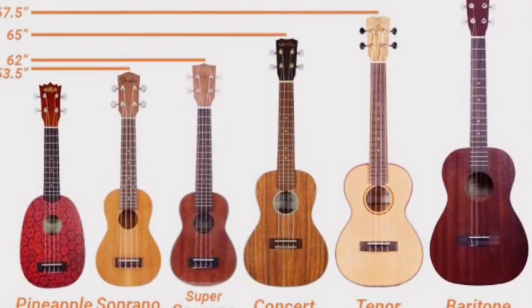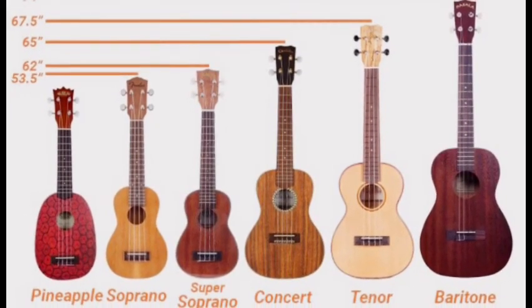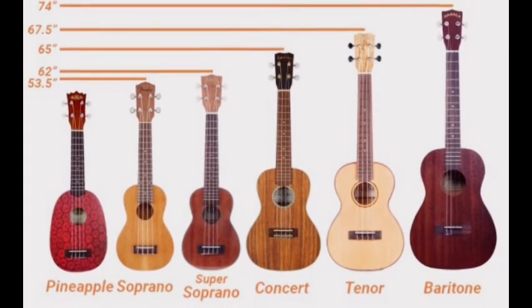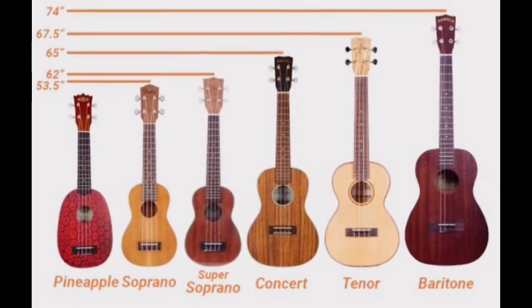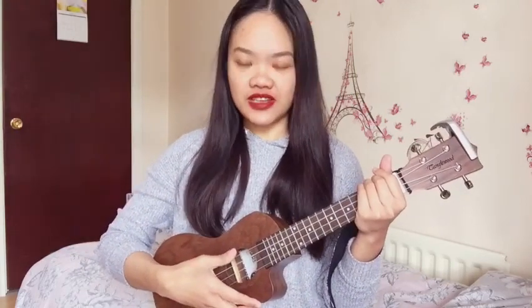There are different types of ukulele based on its size. The one I'm using is the concert type of ukulele. The ukulele is a string instrument just like the guitar, but unlike the guitar, the ukulele has just four strings.